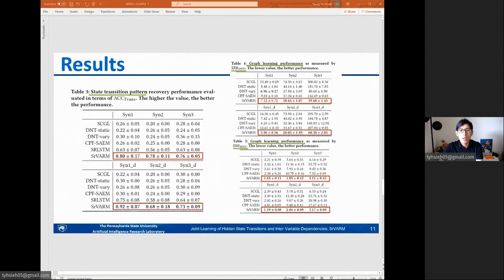The three tables in this slide summarize the quantitative results. On the left, the hidden-state transition monitoring accuracy is reported, and the proposed model achieves the best results in both static pattern and dynamic pattern data sets. On the right, relation learning results are reported. It is observed that the proposed model also performed competitively in both static and dynamic pattern data sets.